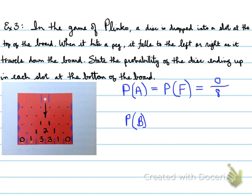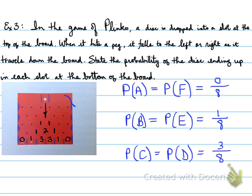Now, the probability of getting B or probability of getting E is equal to 1 in 8. The probability of C and D is equal to 3 in 8. So these are the different probabilities of all the letters at the bottom of the board.